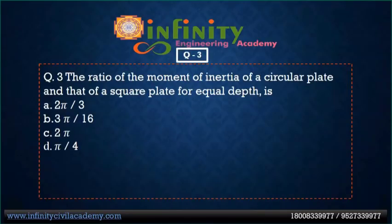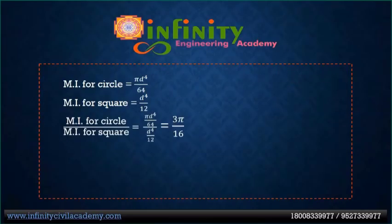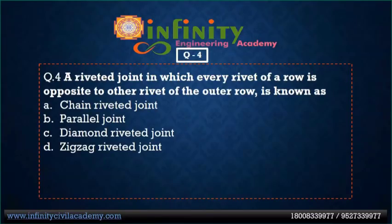Question 3: The ratio of moment of inertia of a circular plate to that of a square plate for equal cross-sections is — option A: 2π/3, option B: 3π/16, option C: 2π, option D: π/4. Option B is correct — 3π/16. For a circle, I = π/64 × D⁴; for a square, I = D⁴/12. Taking their ratio and simplifying gives 3π/16.